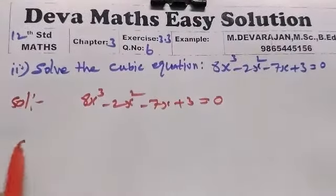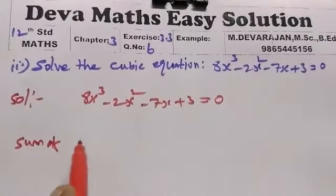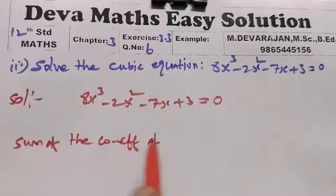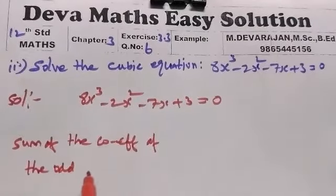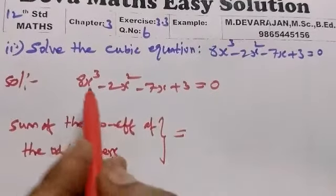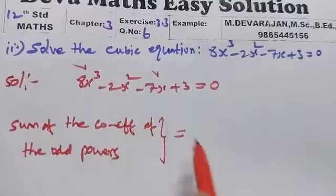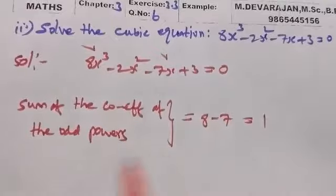Now, sum of the coefficients of the odd powers. The odd powers are x³ and x. Coefficient of x³ is 8, coefficient of x is -7. So 8 - 7 = 1.